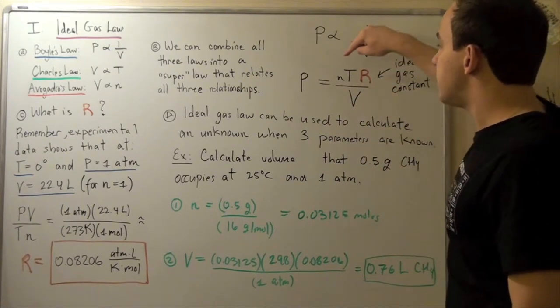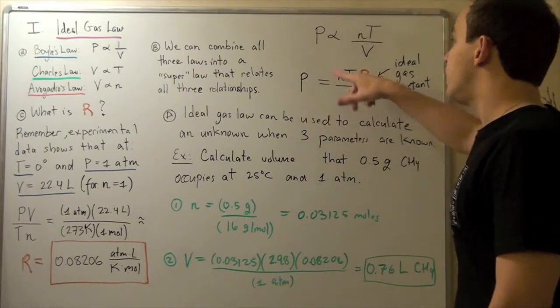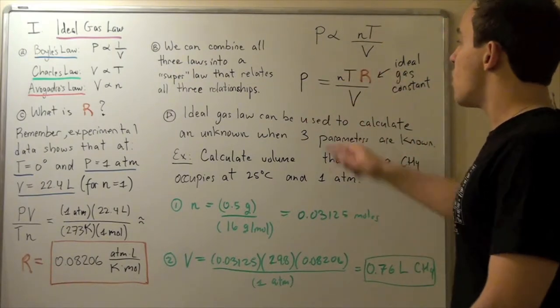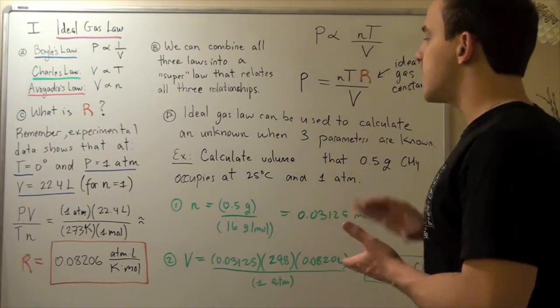If we know, for example, n, T, and V, we can find P. Or if we know P, V, and T, we'll find n. Or if we know P, n, and T, we'll find V, and so on. So let's do an example.